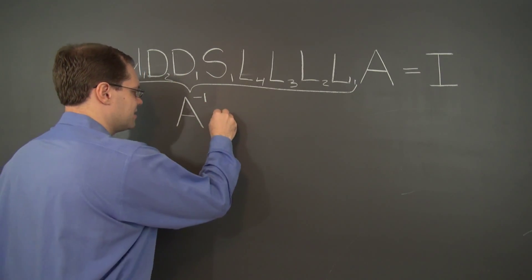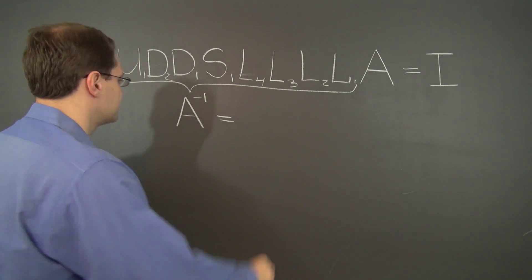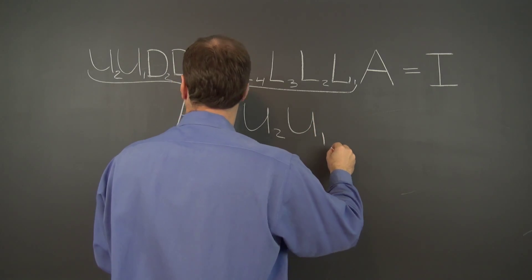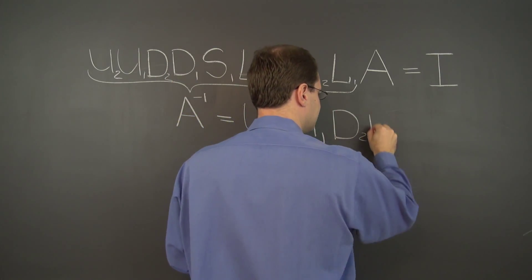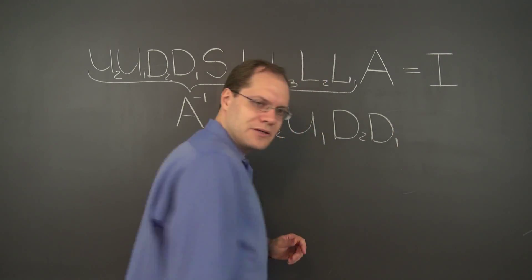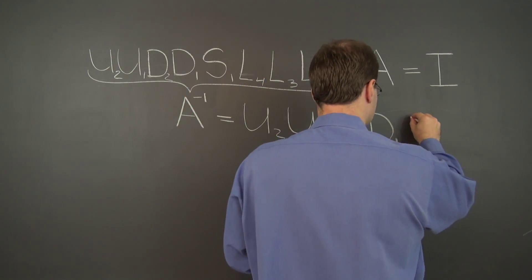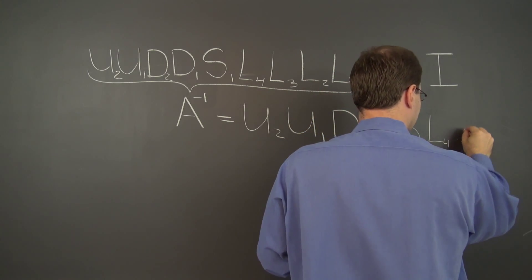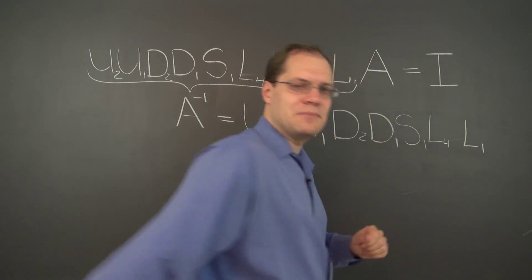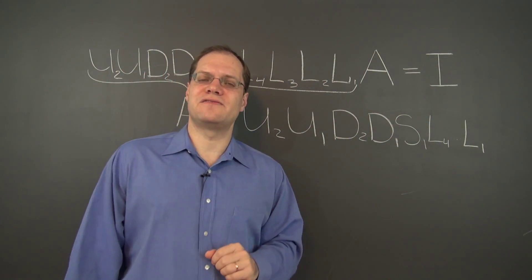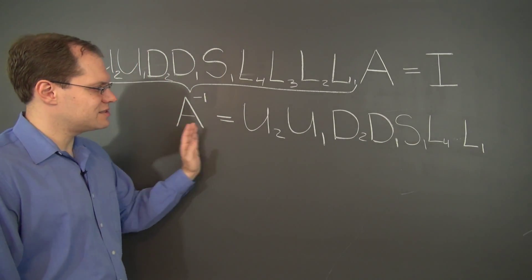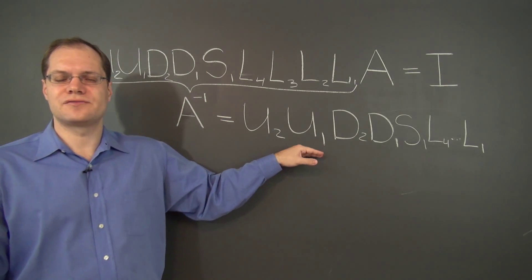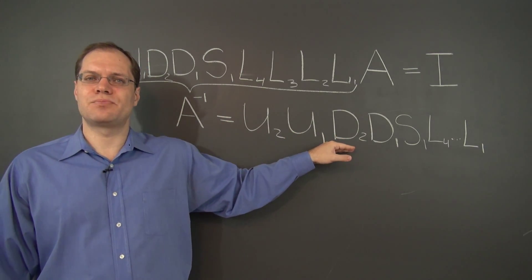A inverse equals this product. Let me write that out explicitly. So we have that A inverse equals U2, U1, D2, D1. I better slow down so it all fits. S1, L4 through L1. Let me make sure it fits. It's barely there. Just enough space. So here is an expression with dot dot dot just to save space for A inverse. A inverse equals this product.